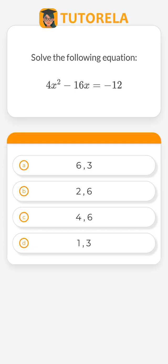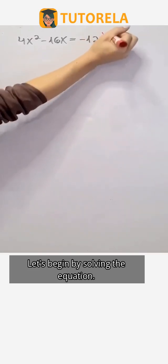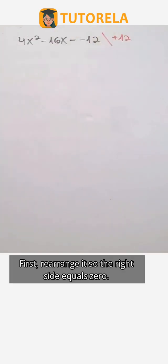Solve the following equation: 4x squared minus 16x equals negative 12. Let's begin by solving the equation. First, rearrange it so the right side equals zero.